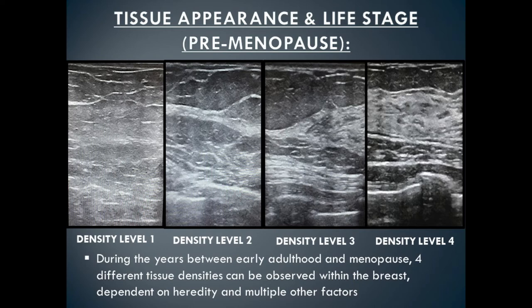We've now reached adulthood before menopause. It's important to remember that tissue appearance varies from slice to slice and quadrant to quadrant in the breast. In adulthood there's a large variation of breast density. Breast density levels are categorized into four distinct categories. In density level one, the tissue is primarily fatty tissue with scattered islands of dense tissue, meaning there's less than 25 percent glandular tissue in the breast.